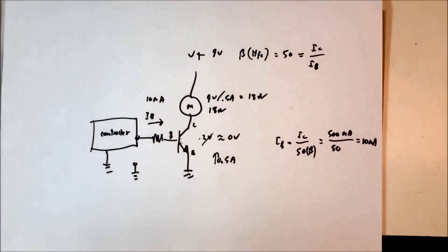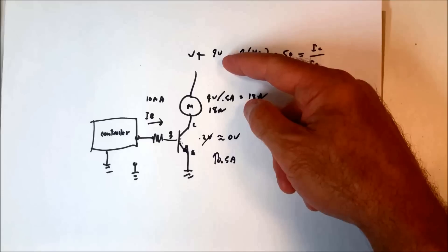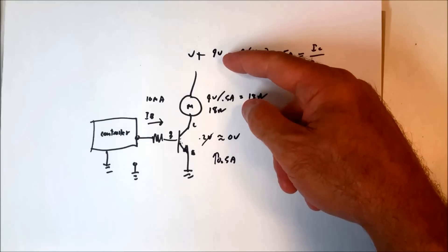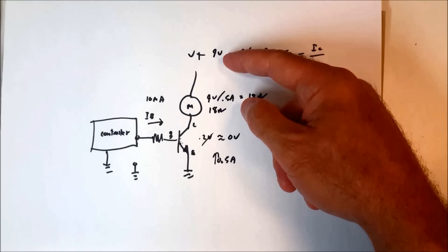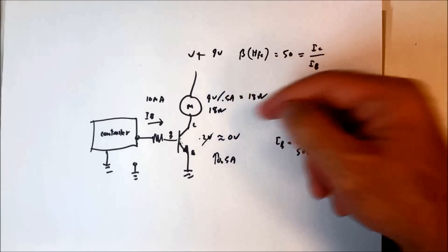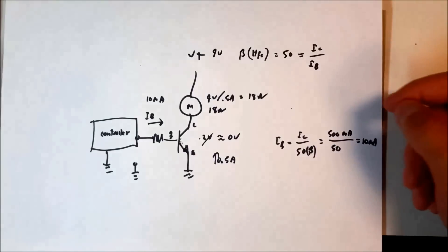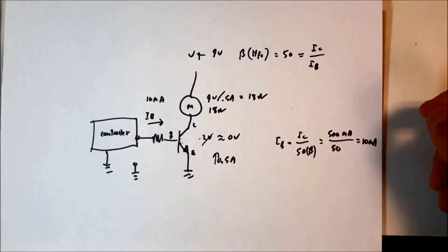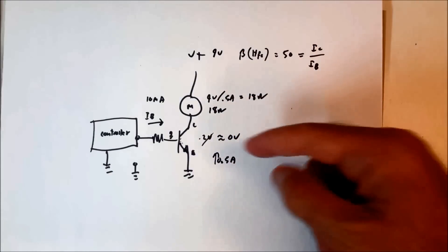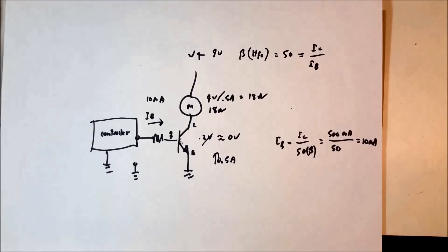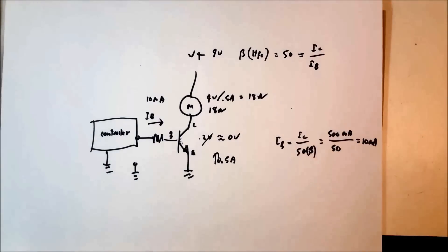You can take the voltage — the 9 volts — and change that to whatever you want: 1 volt, 2 volts, 3 volts, 4 volts, any voltage you want. The collector current will not change very much with a change in that voltage. So the primary thing that determines what the current is through a transistor is the base current.